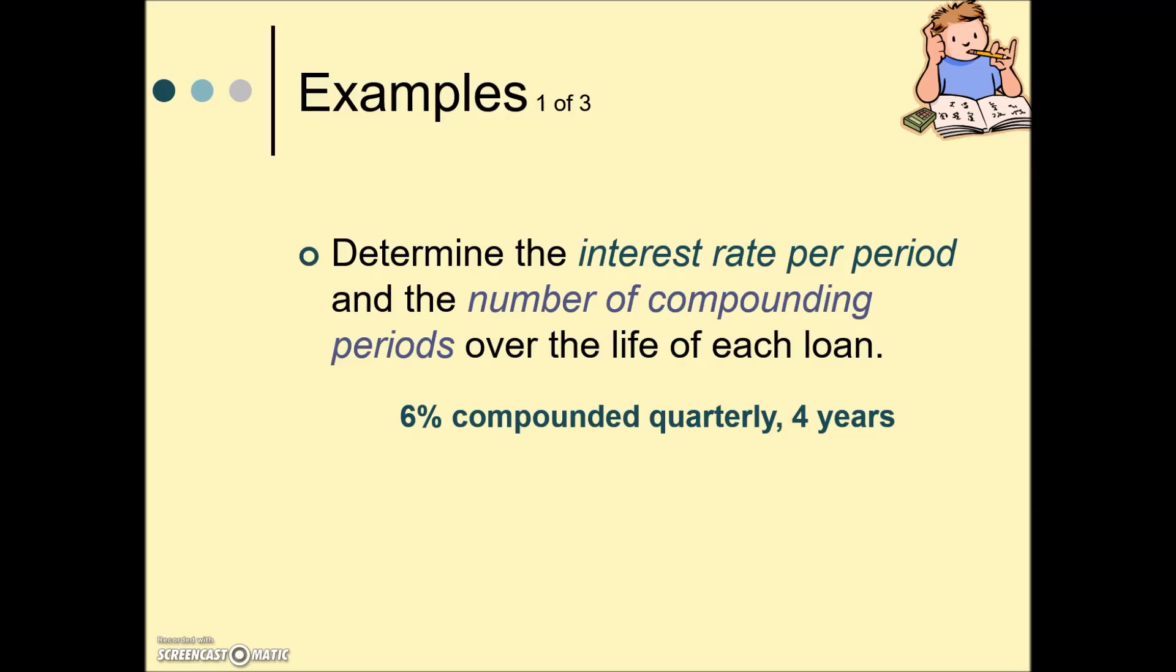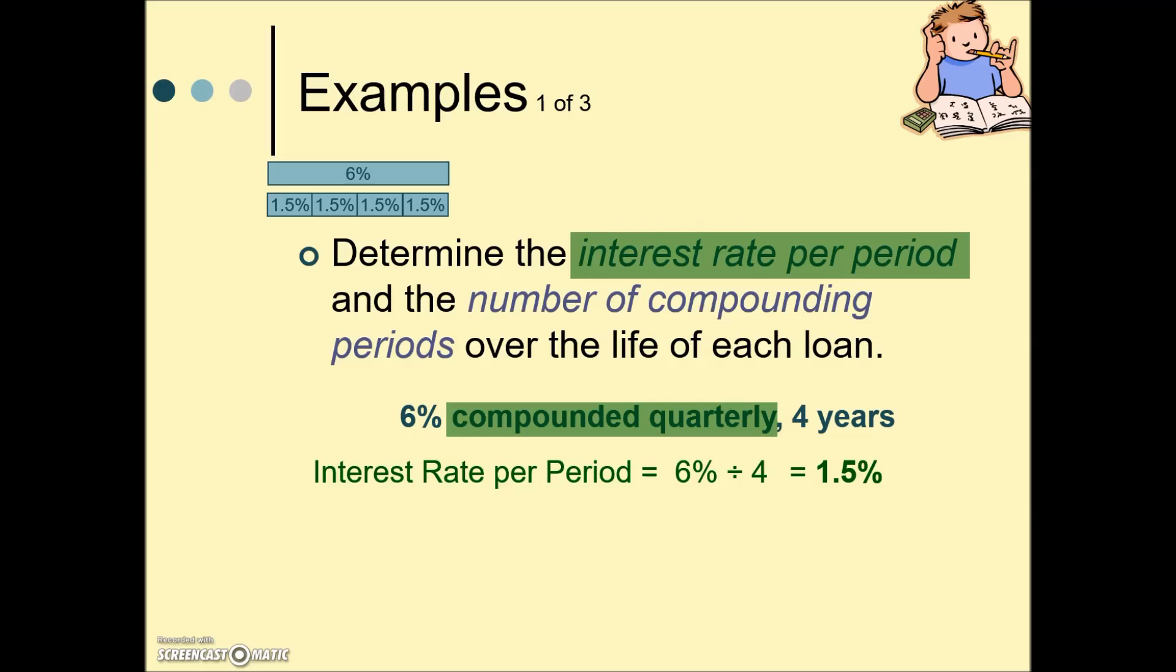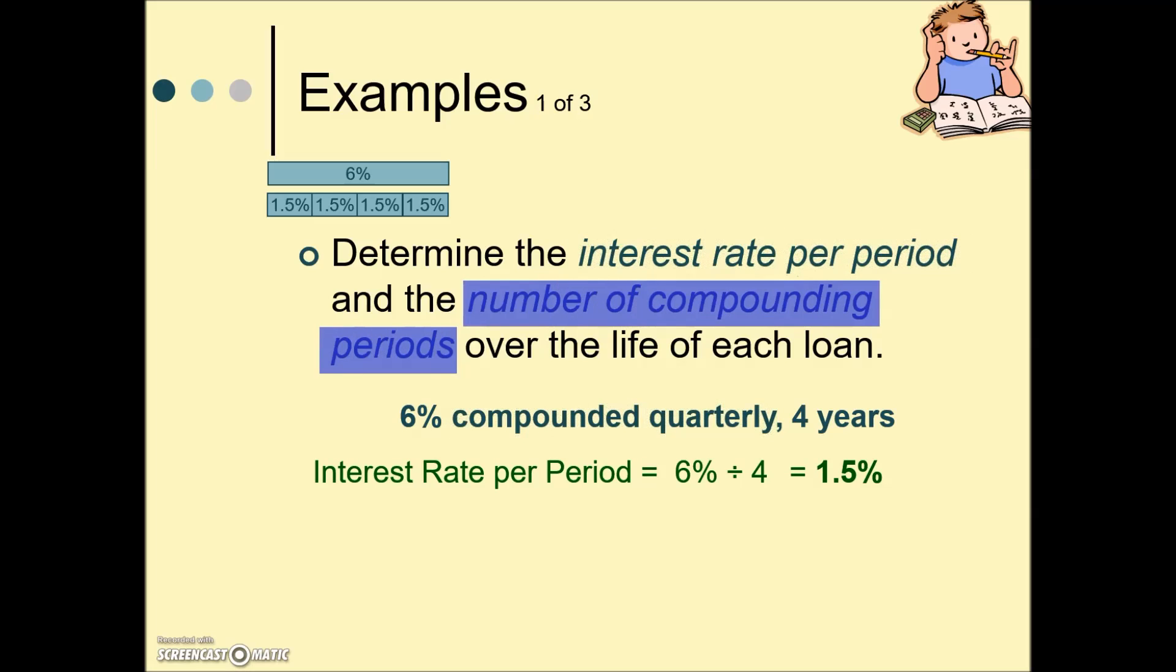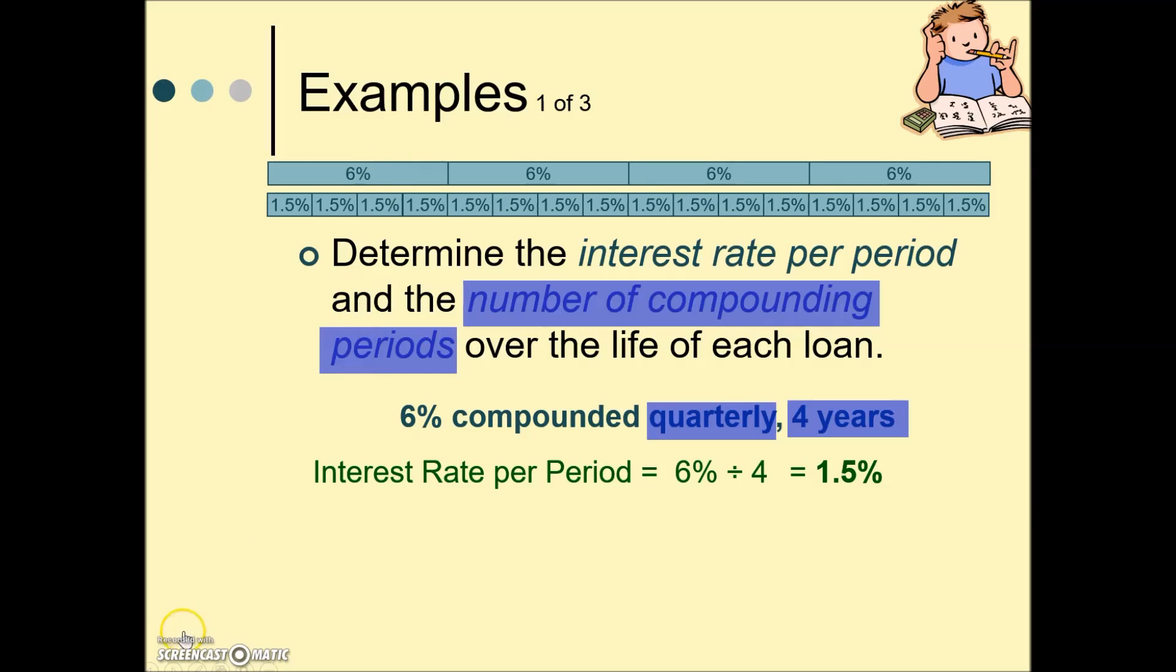In this example we have 6% compounded quarterly. The interest rate per period is what we calculate first, which means we take that 6% and because it's compounded quarterly, we divide it by 4. We're dividing that interest into the number of compounding periods. This gives us 1.5%. How many compounding periods will there be? Well, this will continue on for four years. We have one year currently, and we will continue for the remaining three years for a total of four years times four times per year, giving us 16 compounding periods.